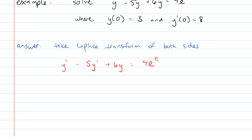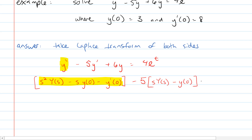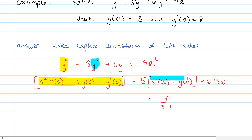When we take the Laplace transform of y double prime we get s squared times capital Y(s) minus s times lowercase y(0) minus lowercase y prime(0). That entire bracketed expression is the Laplace transform of the second derivative from your Laplace transforms sheet. Minus 5 times the Laplace transform of y prime, which is s capital Y(s) minus lowercase y(0), plus 6 capital Y(s) equals 4 over s minus 1, which is the Laplace transform of e to the t.